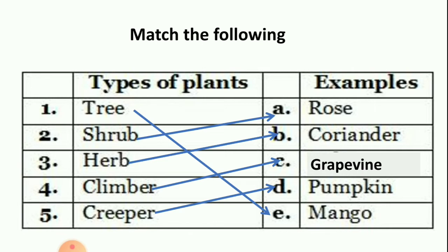Let us revise: tree — mango, shrub — rose, herb — coriander, climber — grapevine, and last is creeper — pumpkin. I hope you all have watched the video and revised it again and again, so this worksheet was easy for you.